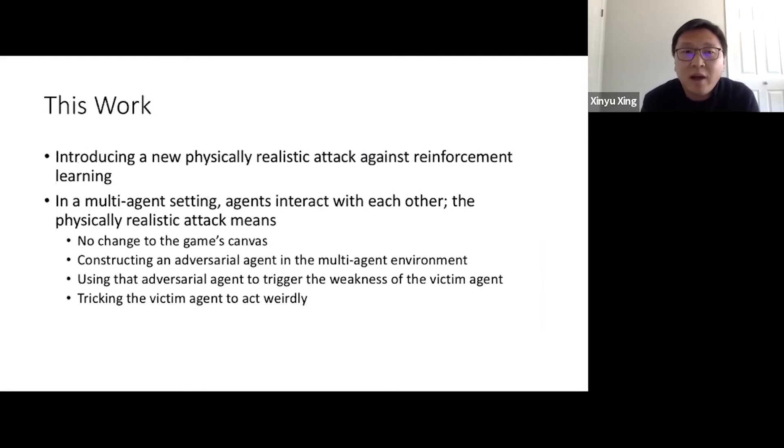So in this talk, I will introduce a new physically realistic attack against reinforcement learning. Different from the attack which I showed you earlier, this attack does not require the gamer to change the canvas. Instead, we will train an adversarial agent in a multi-agent environment and then use that adversarial agent to trigger the weakness of the victim agent, and thus trick the victim agent to act weirdly. At the end of this talk, I will show you a demo video explaining what I mean by an agent acting weirdly.